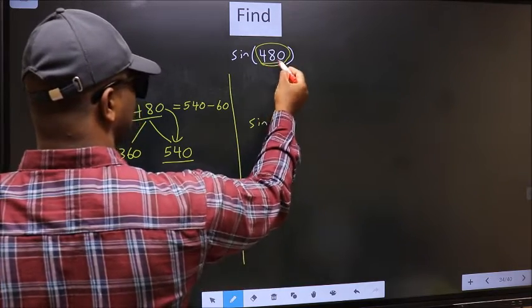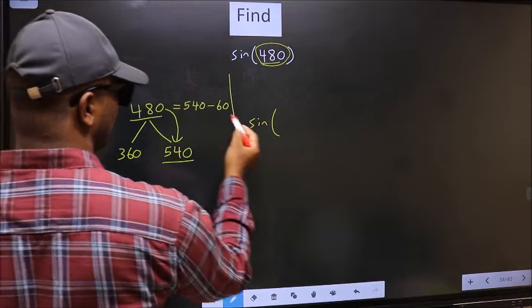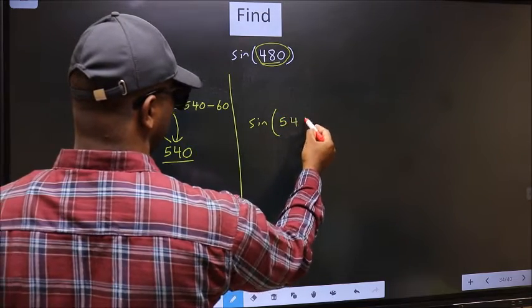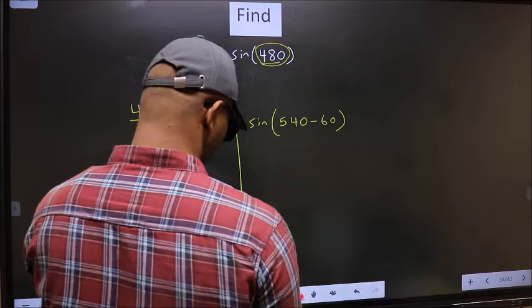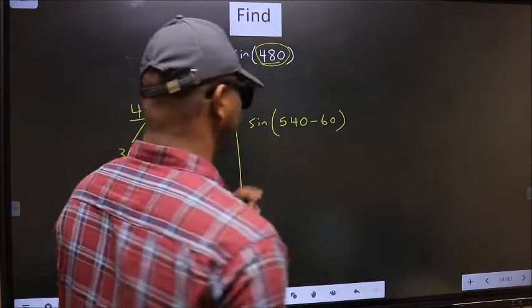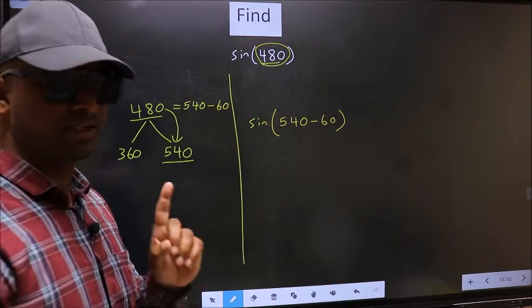So this will become sin. In place of this, we should write this one: 540 minus 60. This is your step 1.